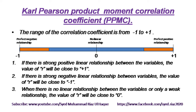The range of the correlation coefficient is from −1 to +1. If there is a strong positive linear relationship, the value of r will be close to +1. If there is a strong negative linear relationship, r will be close to −1. When there is no linear relationship, or only a weak relationship, the value of r will be close to zero.